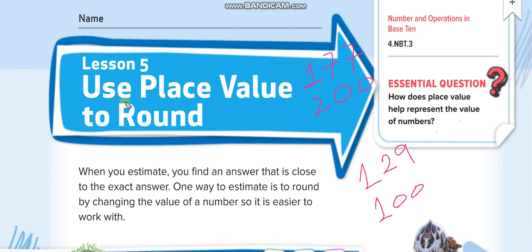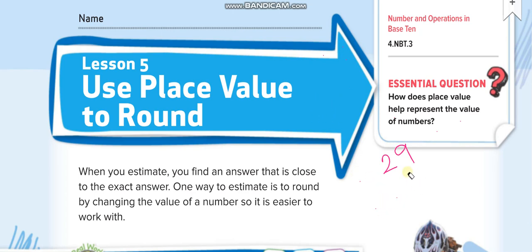When we round to specific place values, we need to know which place value to round to. In that example we were rounding to hundreds — the maximum place. But if I ask you to round to tens or ones, there's a specific process. We will learn that in this lesson. Let us solve the first example.